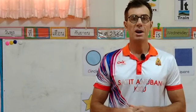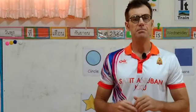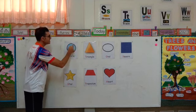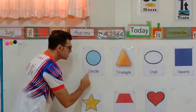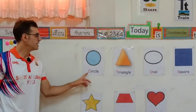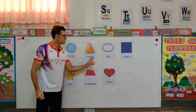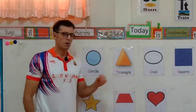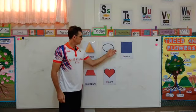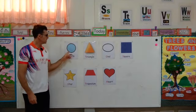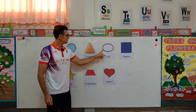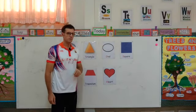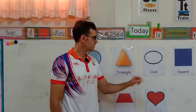Let's look at the topic for the day. We talk about shapes. What is this? Circle. Circle, with letter C. Triangle. Oval, with letter O.